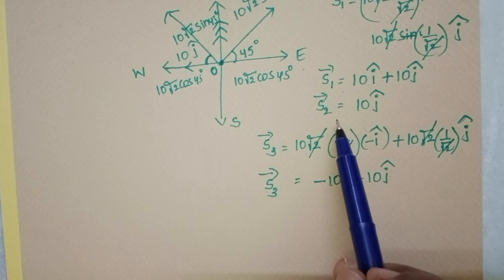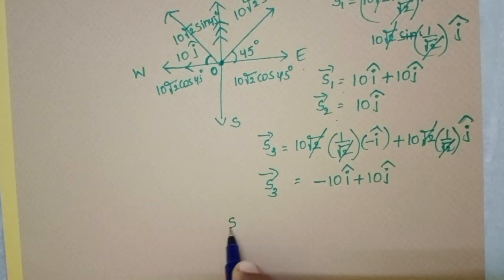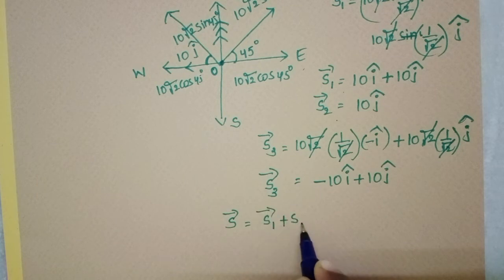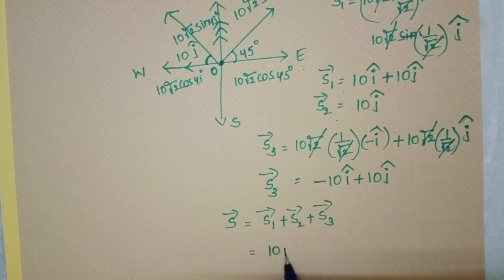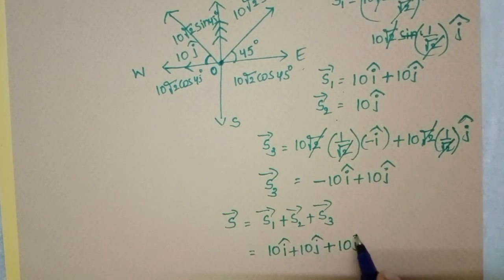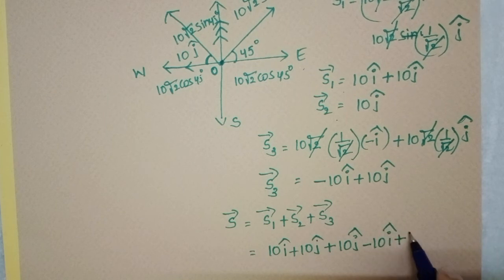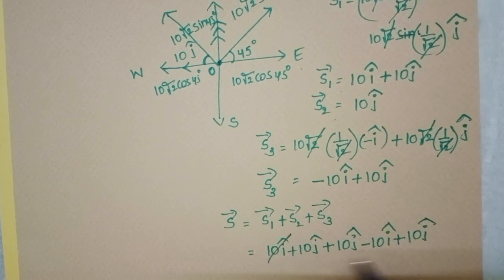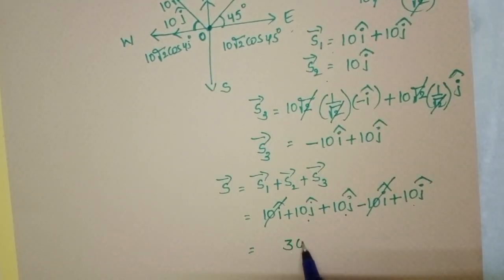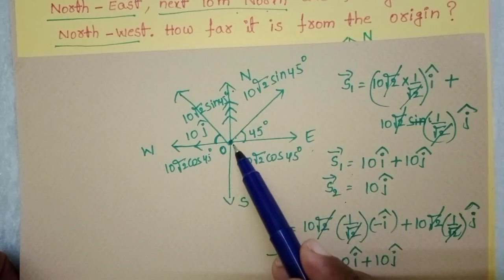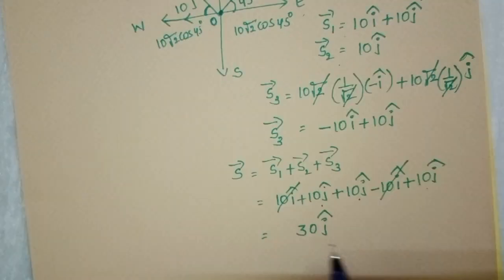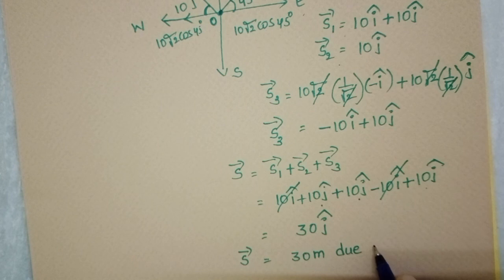We now know S1, S2, and S3. The total displacement S = S1 + S2 + S3 = (10i + 10j) + (10j) + (−10i + 10j). The i cap components cancel: 10i − 10i = 0. The j cap components add: 10 + 10 + 10 = 30j cap. Since j cap is the unit vector along the north direction, the particle is finally 30 meters due north from the origin.